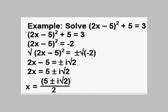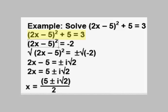We're going to do an example of solving a quadratic by extracting square roots. We're going to solve the equation (2x − 5)² + 5 = 3. The first step is to get your equation in the correct form: you have to get the squared quantity isolated on one side and some numerical value on the other. We do that by subtracting 5 from both sides, and we get (2x − 5)² equals negative 2.